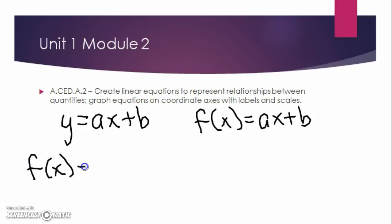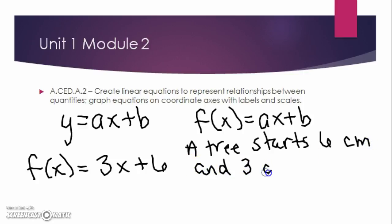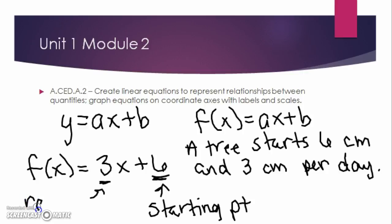Let's say our example is f(x) = 3x + 6, and let me give you a story here. Say our story is: a tree starts at six centimeters and grows three centimeters per day. So that makes the six our starting point, and then our three is our rate of change: how much is the height of that tree changing per day? Rate is always a per something—per hour, per minute, per day.